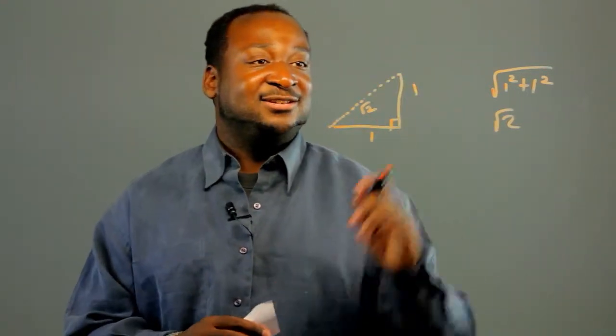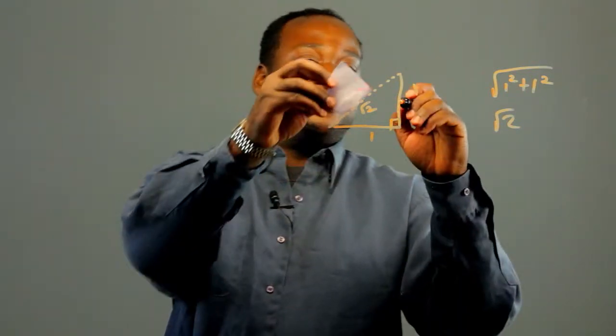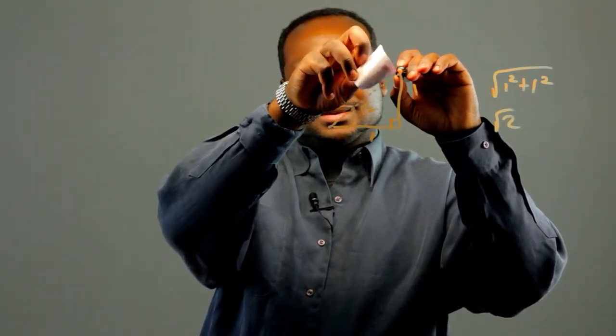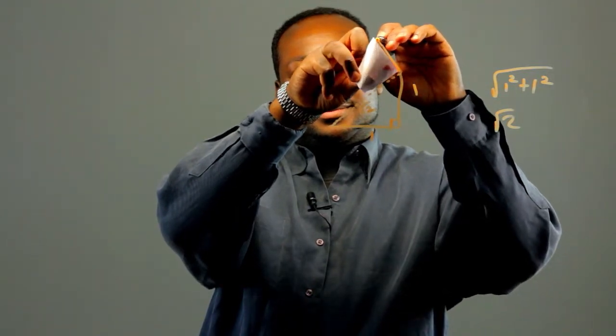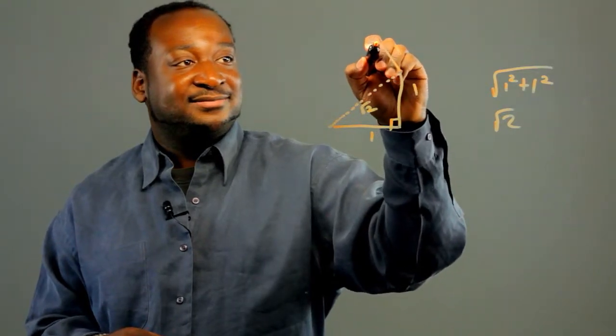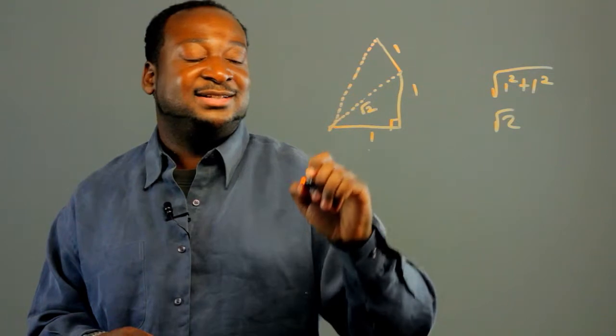And from this triangle, you make another triangle, make a right triangle. There's another 1 unit. And you draw the hypotenuse here.